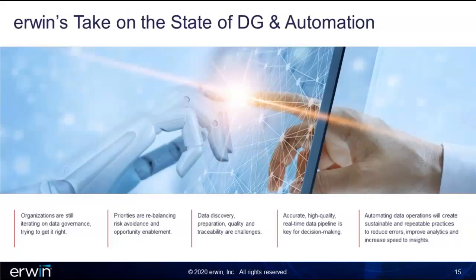The more that we can automate, the more we will have a sustainable and repeatable practice that's going to reduce errors and improve all the things we're trying to do with data. It's also going to build us a better architecture and infrastructure around data that makes all the follow-on pieces easier to work with, easier to manage over time, easier to move and adjust to new challenges we know are coming.